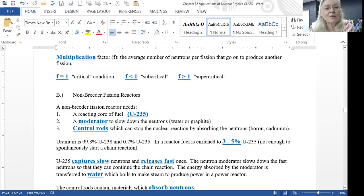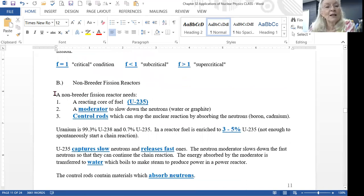So let's look at non-breeder fission reactors. These are the kind that we have in nuclear power plants in the United States. They have a reacting core of fuel of uranium-235. They have a moderator to slow down the neutrons. Remember, the uranium absorbs slow neutrons but produces fast ones. So for the reaction to continue, you have to slow down the neutrons. The moderator is water in most reactors. The original reactor was made with a graphite moderator. The reason we don't use them anymore is that graphite tends to overheat and be a fire hazard. So water is way safer. And then you have to have control rods. Control rods actually stop the nuclear reaction by absorbing the neutrons.